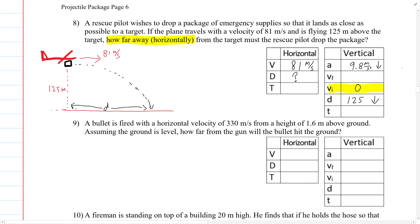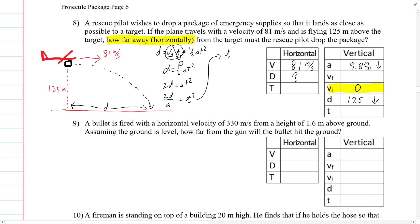We'll use d equals v-i times t plus one-half a t squared, but the first term is zero because v-i is zero. So we get d equals one-half a t squared, which rearranges to 2d equals a t squared, then 2d over a equals t squared. So t equals the square root of 2d over a. This only works if that initial velocity term is zero.